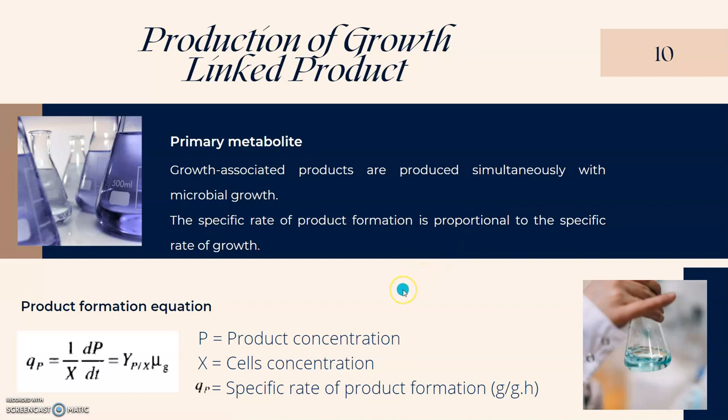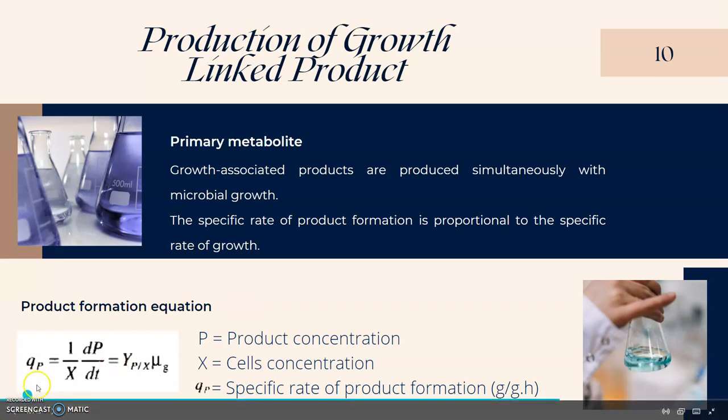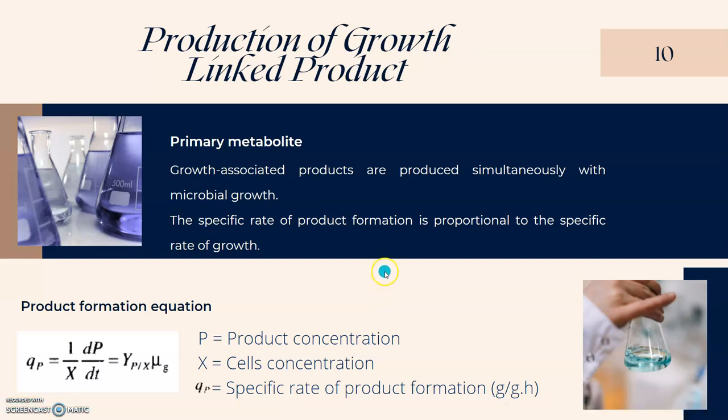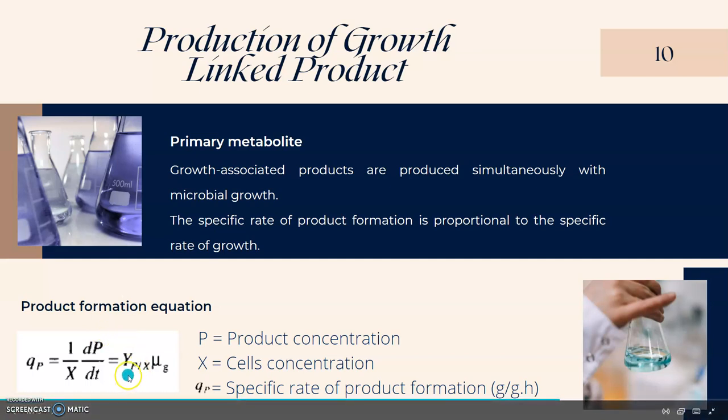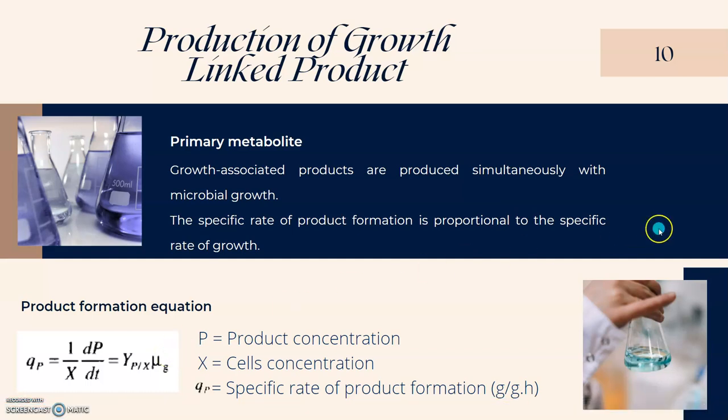Next is production of growth-linked product. Primary metabolites, which are growth-associated products, are produced simultaneously with microbial growth. The specific rate of product formation is proportional to the specific rate of growth. Product formation equation given here is q_p equals 1/x times dp/dt. We need to find Y_p/x and μ_g can be obtained from the Monod model. Then we can get q_p, the product formation rate.